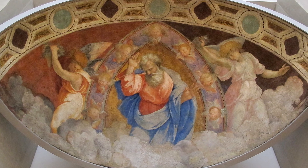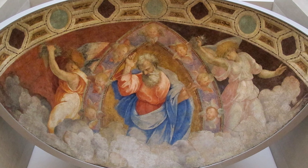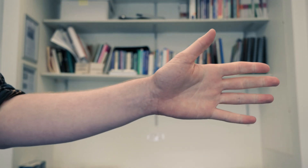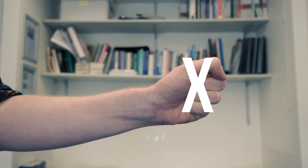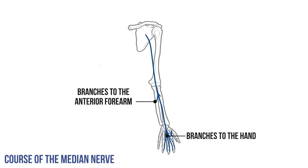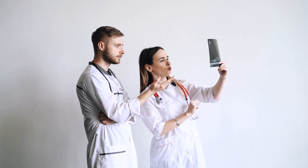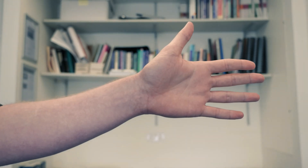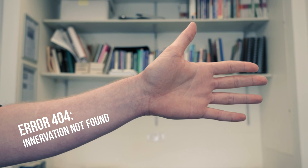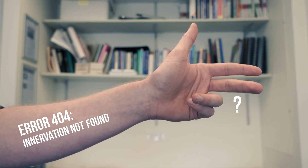At this point you can be pretty confident that your benediction patient has injured their median nerve. Damage to the nerve will stop those flexors from working and the patient won't be able to make a fist. Furthermore, if the muscles in the hand and forearm have been affected, the damage to the nerve must be at the elbow or higher. But we still have one last mystery to solve: if the finger flexors in the anterior forearm have lost their innervation, why can the patient still bend their medial two digits?